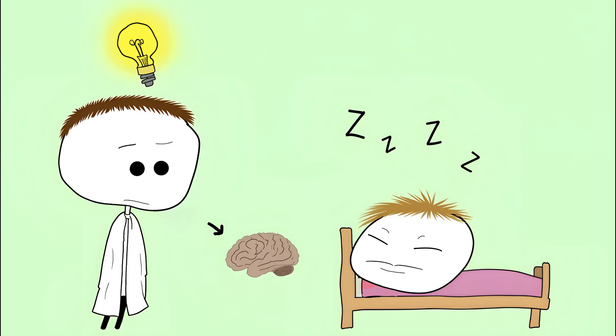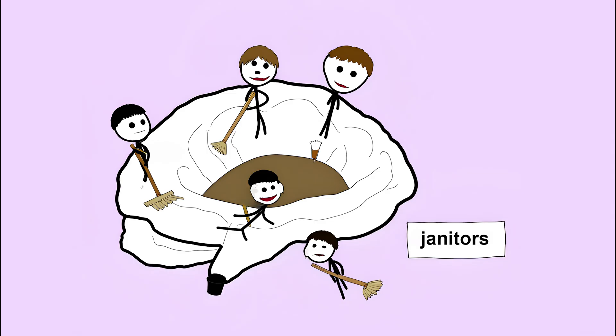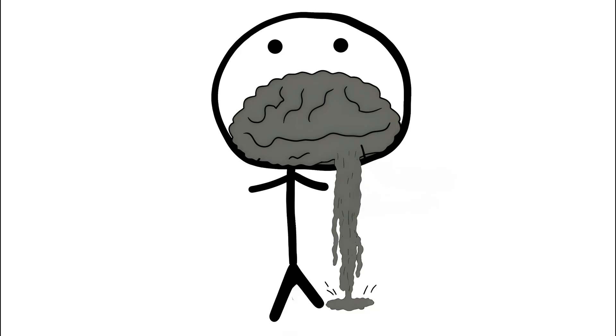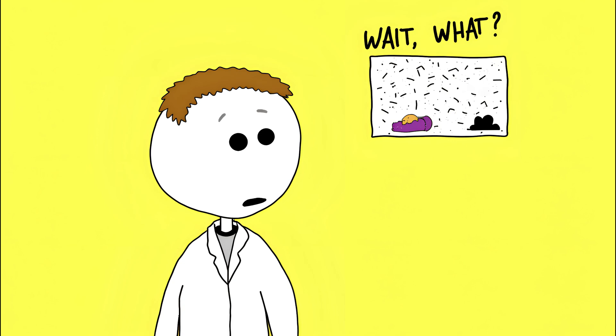Scientists recently discovered that while you're sleeping, your brain switches on something called the glymphatic system. Think of it as your brain's overnight janitorial staff. It flushes out waste, toxins, and even the bits of protein linked to diseases like Alzheimer's.